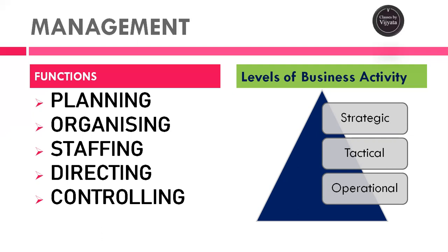Depending on the business activity, we have different information needs, and hence decision making is different at each level. At the strategic level, we make long-term decisions. At the operational level it is very short-term. Managerial or middle-level management is a combination of strategic and operational — they tactically handle the mission and vision of the organization set at the strategic level, carrying it forward to meet goals through the operational level. These three levels — top, middle, and lower management — together perform managerial functions, and all these functions require information for decision making.